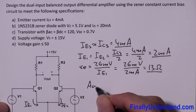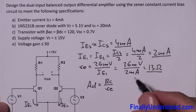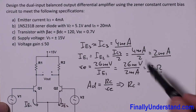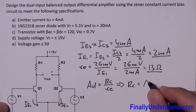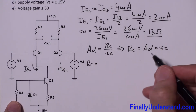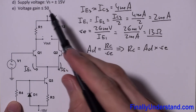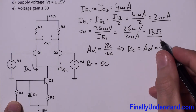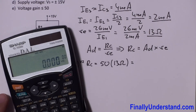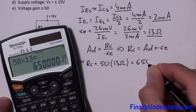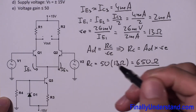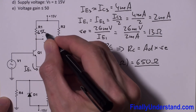Next, if I have the AC emitter resistance, I can use the formula for differential gain: differential gain equals RC over small re. If I solve this formula for RC, I get the values of resistors R1 and R2. So RC equals differential gain times small re. Plugging in values: RC = 50 times 13 ohms = 650 ohms. So R1 and R2 are both 650 ohms.